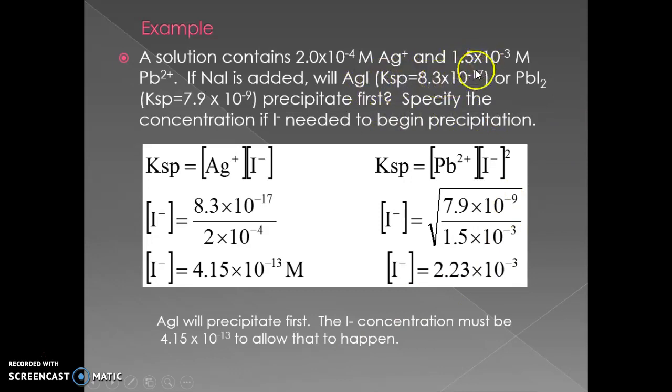Silver iodide has a Ksp of 8.3 times 10 to the negative 17. That's really small. That means it's not going to take very much I minus to start getting this ion to precipitate out. With lead iodide, however, the Ksp is much larger. You've got more I minuses needed to get it to separate.